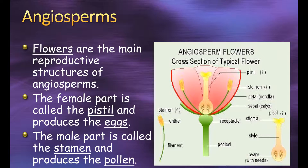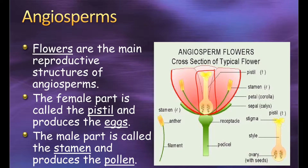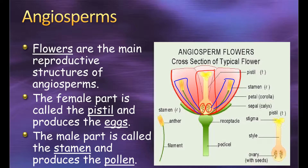Angiosperms are plants capable of making flowers, and the flower itself is the main reproductive structure. Flowers can be male or female, or hermaphrodite — having both male and female structures on the same flower in separate sections. The female part of the flower is called the pistil, and at its base it produces egg cells called ovules. The male part of the flower is called the stamen, and that is where pollen is made.